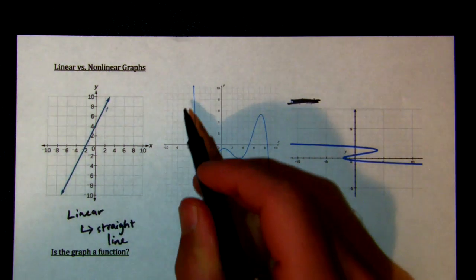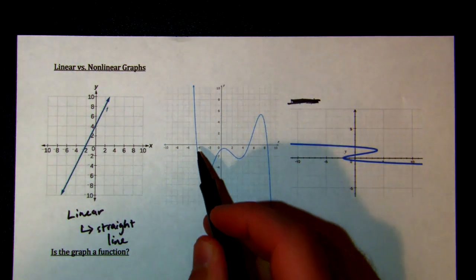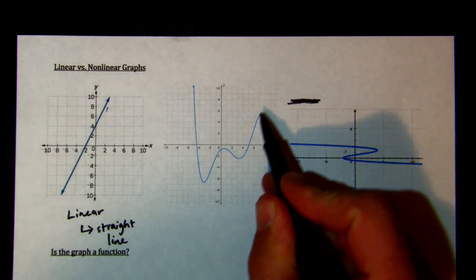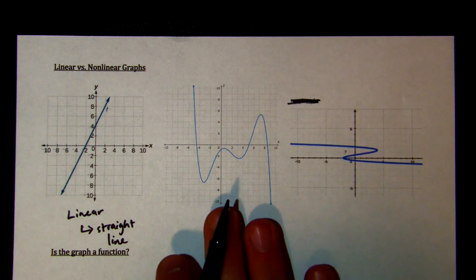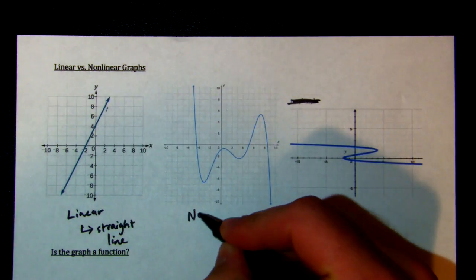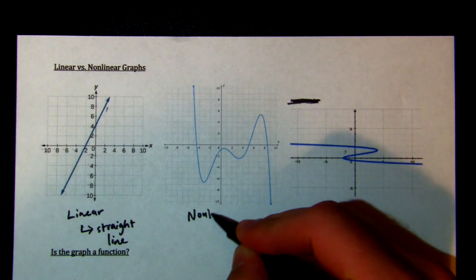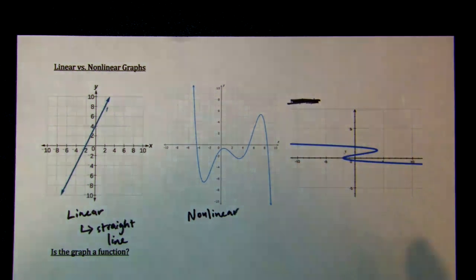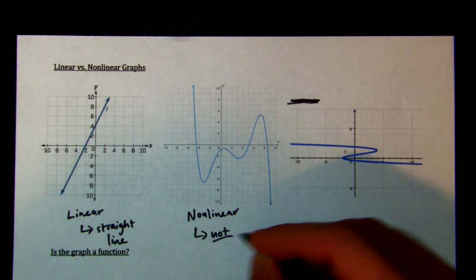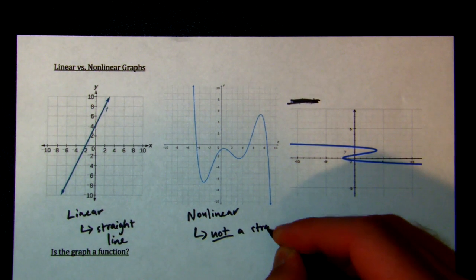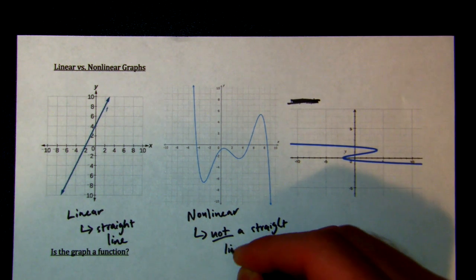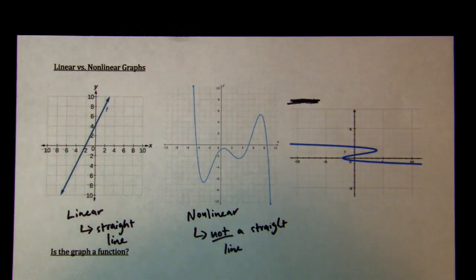If we look at this one, it's linear for a little bit and then it curves, and then it curves again and again. So the second one is non-linear. We say it is non-linear because it is not a straight line.